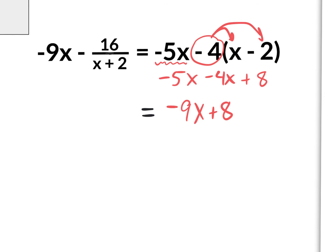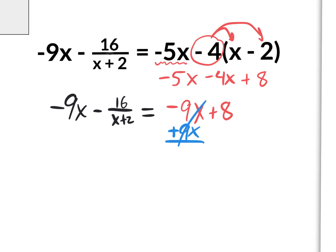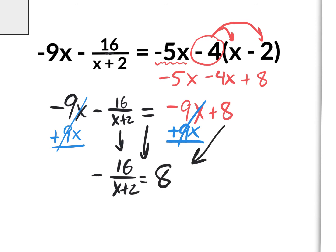Let me rewrite the left side. Now that it's simplified, I want to start getting x by itself on one side. I notice there's a negative 9x on the left and a negative 9x on the right. I can eliminate both by doing the inverse operation: the opposite of negative 9x is positive 9x. Adding 9x to both sides completely eliminates both, leaving the new simplified equation: negative 16 over (x plus 2) equals 8.